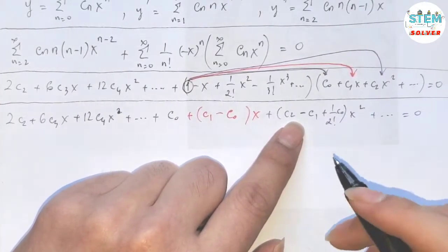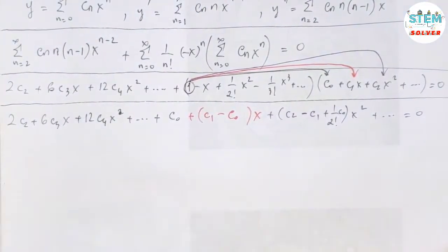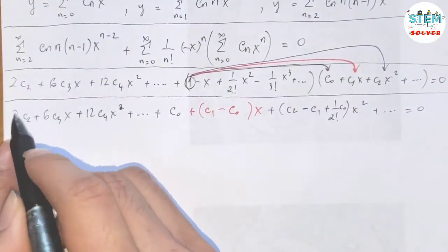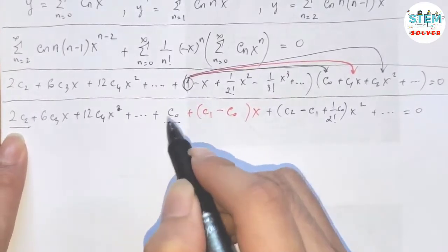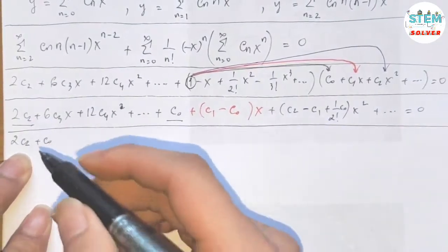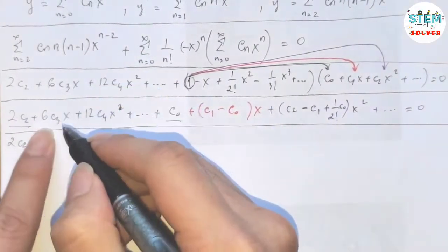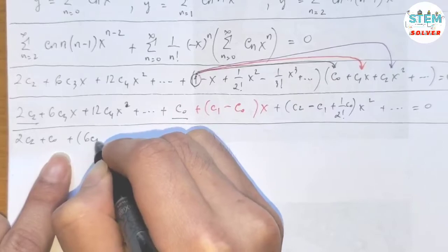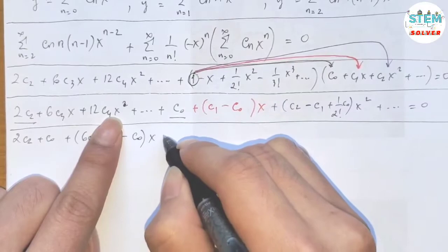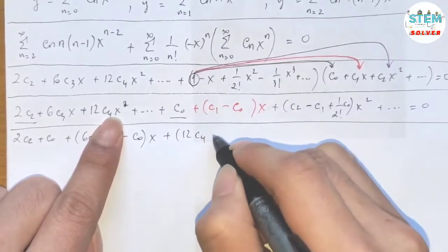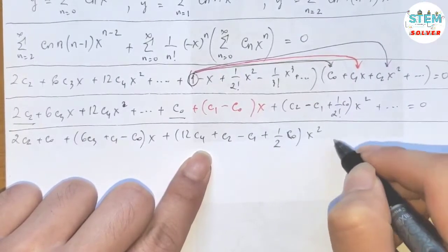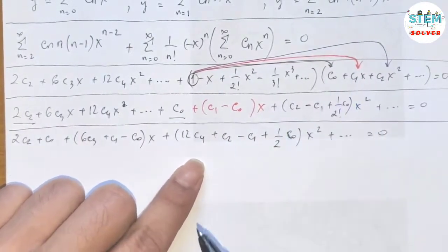Now we combine like terms. For the constant term: 2c_2 plus c_0. For the x term: 6c_3 plus c_1 minus c_0. For the x squared term: 12c_4 plus c_2 minus c_1 plus 1 half c_0, times x squared, plus dot dot dot, equals zero.